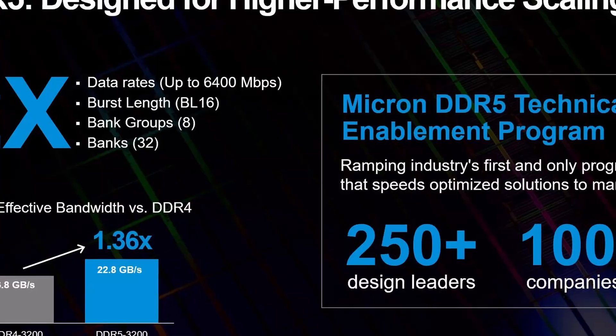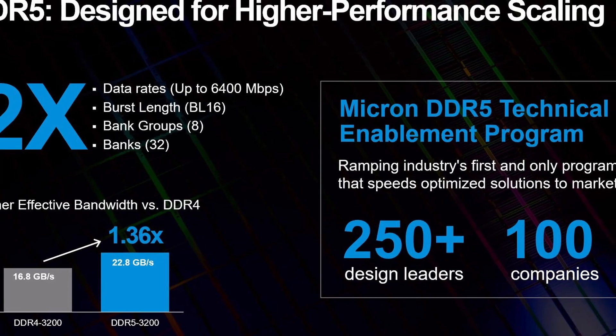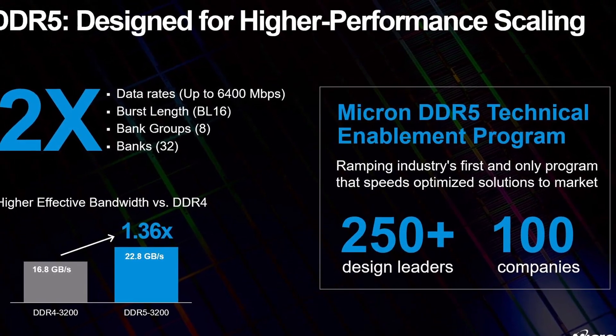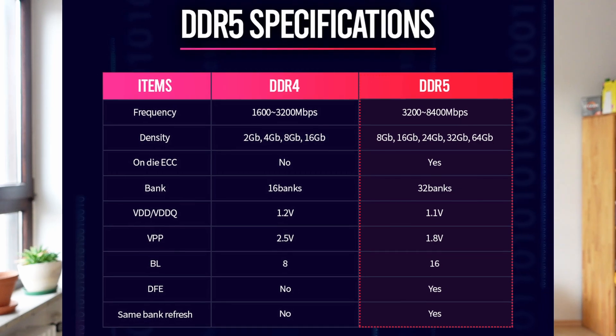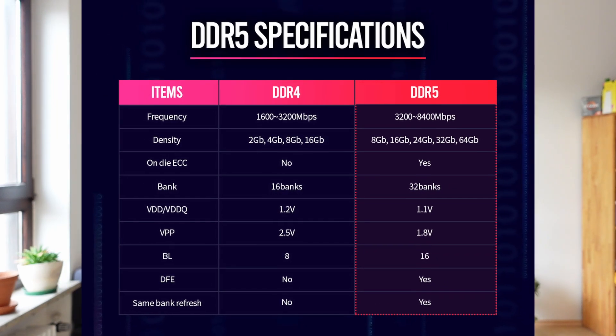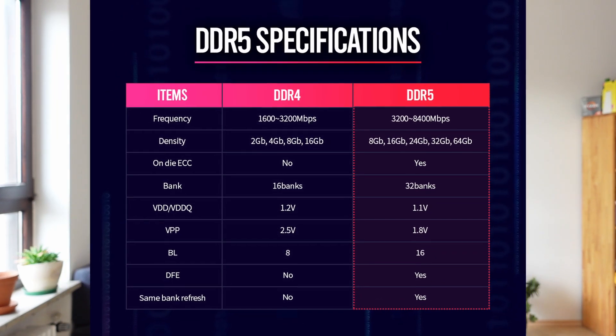DDR5 differs a lot from the previous DDR versions. There are changes to the memory ranks, to the burst modes, and instead of one 64-bit channel, DDR5 now has two independent 32-bit links. Linus Tech Tips has a really interesting video going into all the nitty-gritty details — I'll put a link down in the description below.